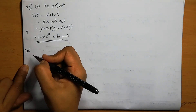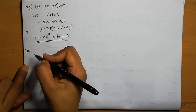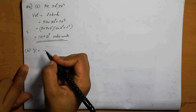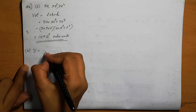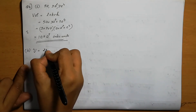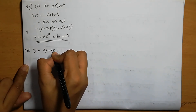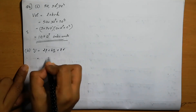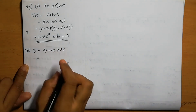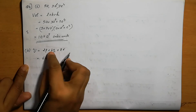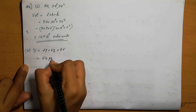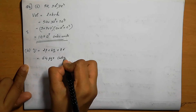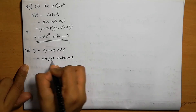Second one: 2p, 4q, and 8r. Volume is equal to 2p into 4q into 8r. Numbers: 2 into 4 is 8, 8 into 8 is 64. Variables: p into q into r is pqr. So the volume is 64pqr cubic units.